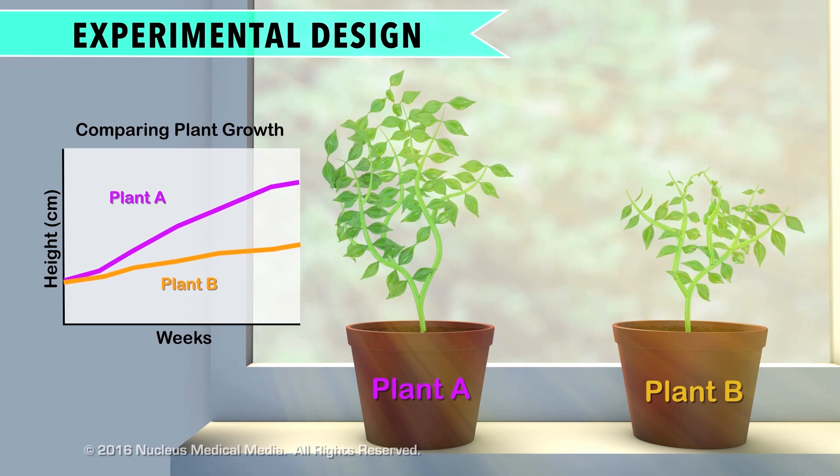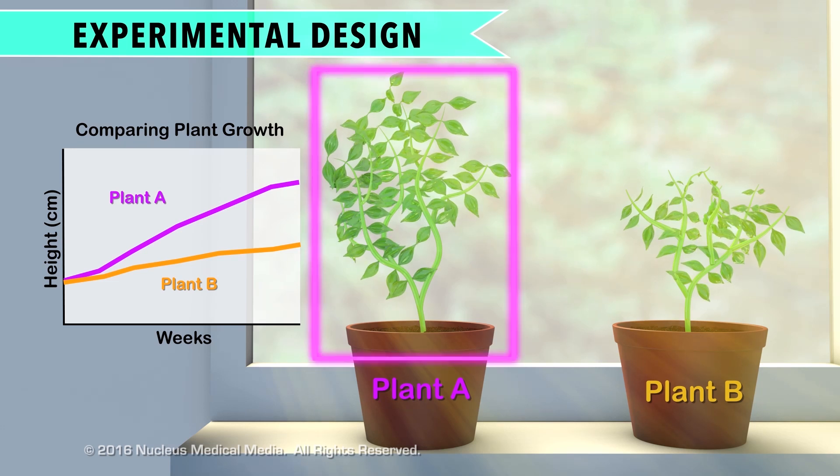As you can see, plant A did grow bigger than plant B. So it appears that the results of this controlled experiment support your hypothesis.